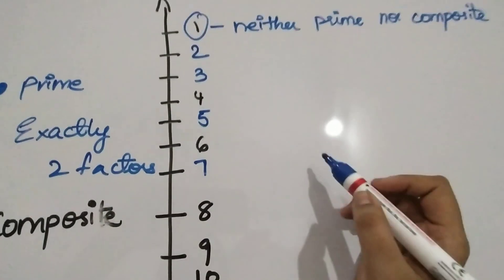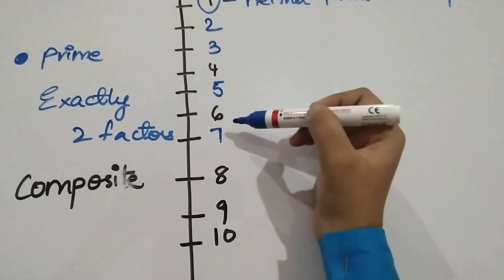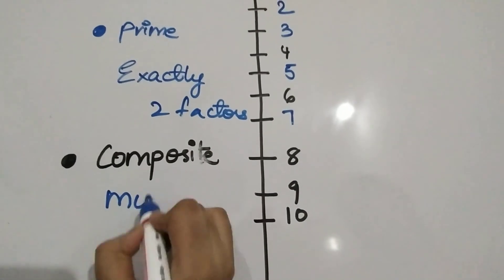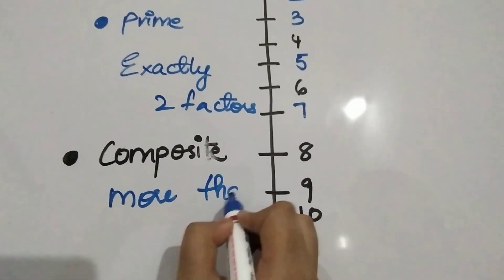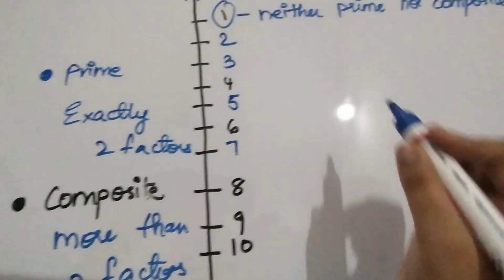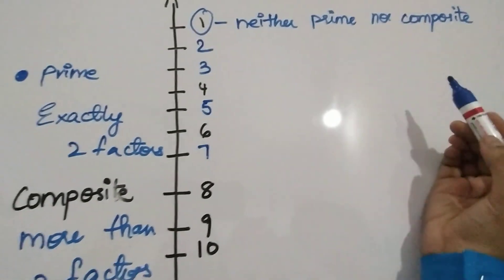And what are composite numbers? Composite numbers are 4, 6, 8, 9, 10. They have more than two factors. So one is neither prime nor composite.